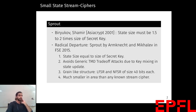In 2001, at Asiacrypt, Biryakov and Shamir presented a work in which they proved that the internal state of a stream cipher should be one and a half to two times the size of the secret key. Otherwise, the stream cipher would be vulnerable to some generic time-memory trade-off attacks.